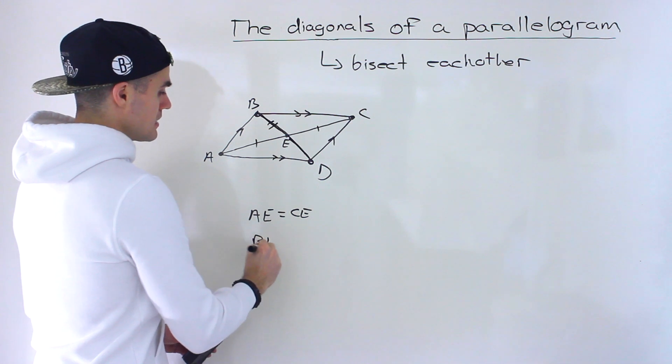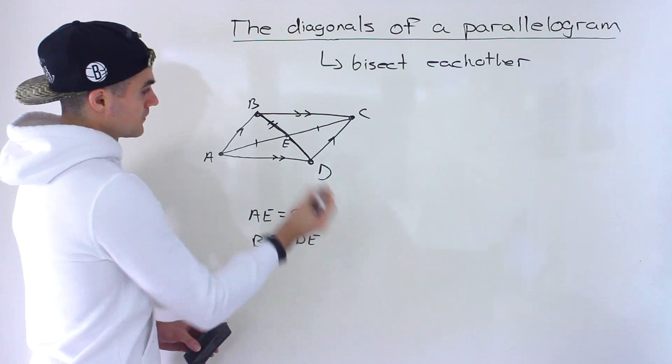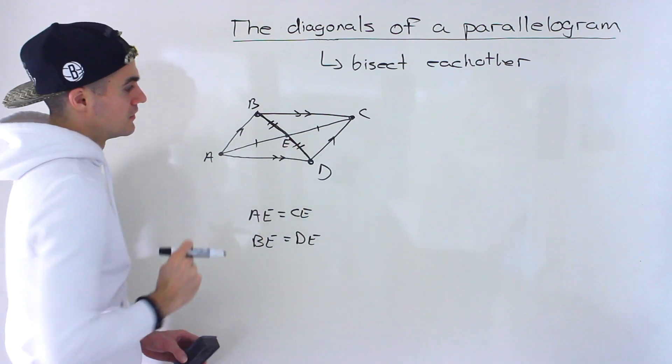So we could say BE is equal to the length of DE. Sorry, I forgot to label this right there like that.